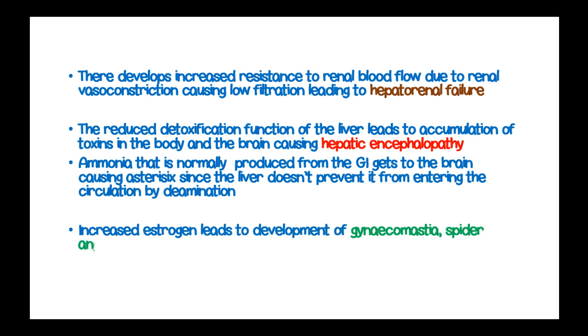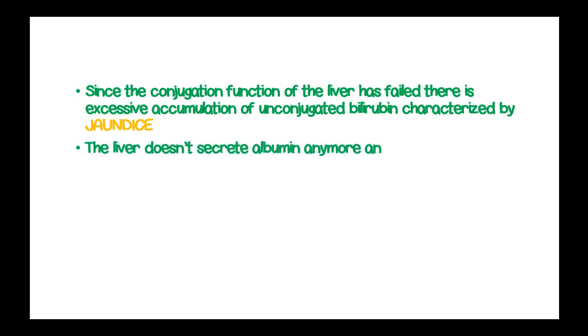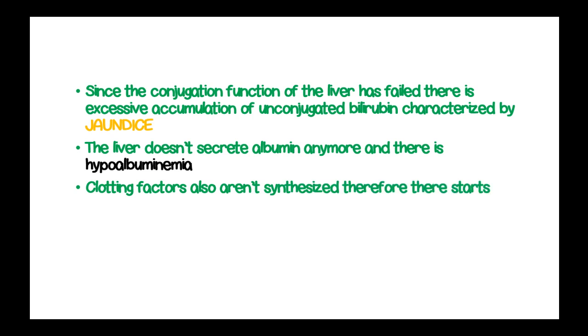Increased estrogen levels lead to development of gynecomastia, spider angiomata, and palmar erythema. Since the conjugation function of the liver has failed, there is excessive accumulation of unconjugated bilirubin, which is clinically evident by jaundice. The liver also no longer secretes albumin, leading to hypoalbuminemia. Clotting factors are also not synthesized, resulting in coagulation issues such as hypocoagulability of the blood.